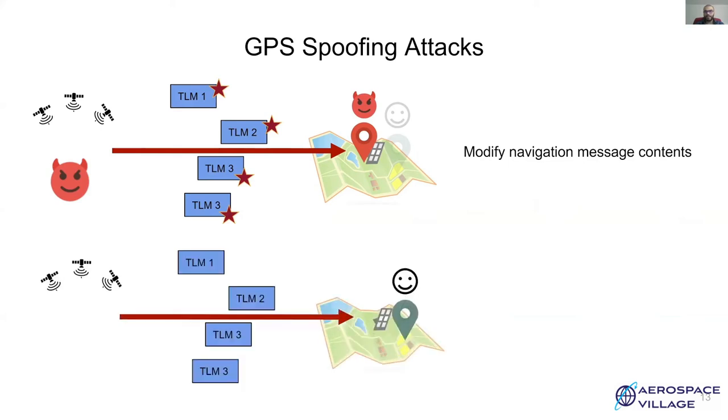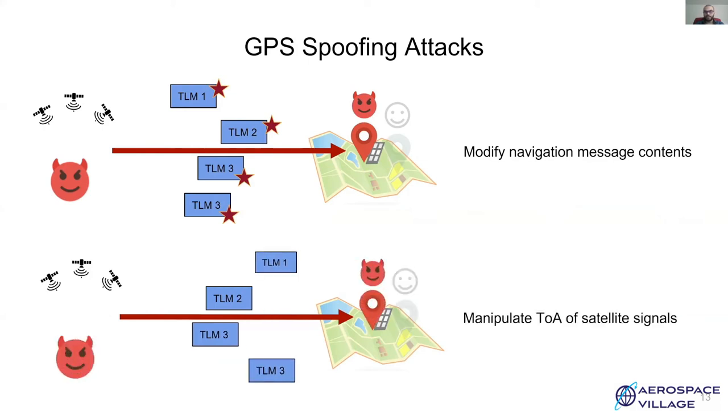Attacker modifies the navigation message content such that the receiver uses altered satellite positions for calculation of the PVT solution. Such an attack can be easily detected using external sources, as it is trivial to verify the validity of the received navigation messages. In the second method, the attacker keeps the message contents identical, and instead manipulates the time of arrival of the messages, such that the pseudo range calculations are altered. Such an attack is hard to detect. However, it requires access to real-time satellite ephemeris data.